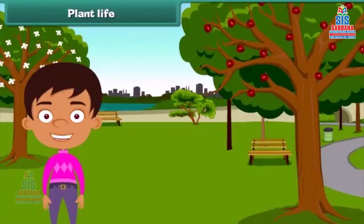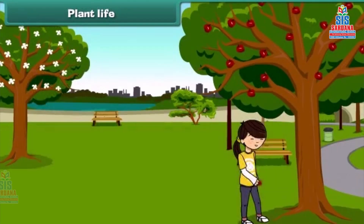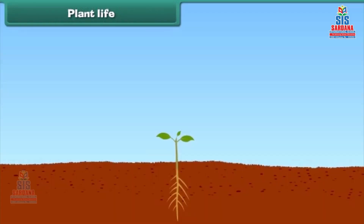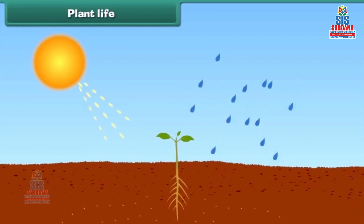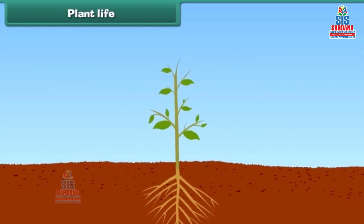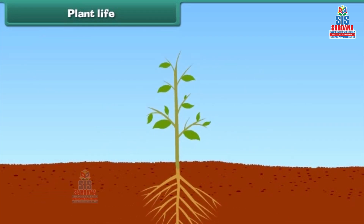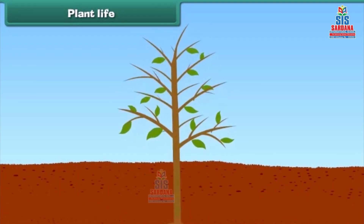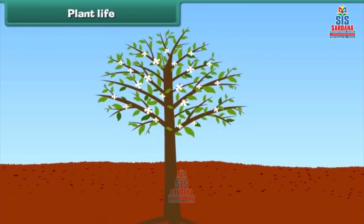Hello, friends. I am Sam. Do you know that plants are also our friends as they give us food and many other useful things? Besides this, they also give us shade. They are also living like us. They need their own food and water to live and grow. They also have the ability to grow and become tall like us.